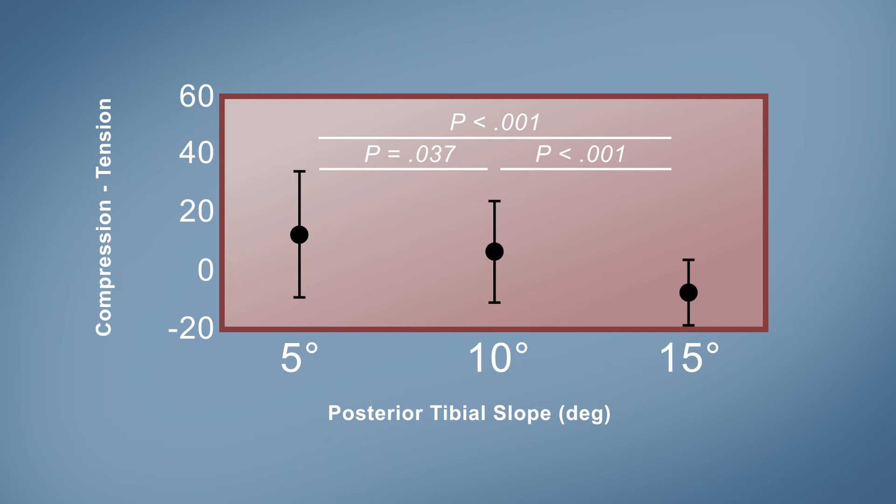The team discovered that the tension on the PMMR decreased as the posterior tibial slope increased from 5 degrees to 10 degrees, but increased at 15 degrees of posterior tibial slope.